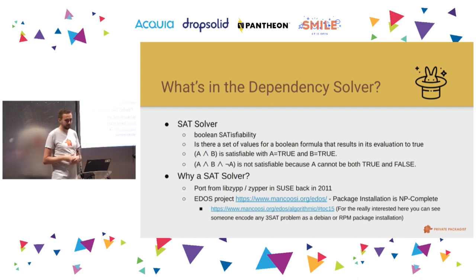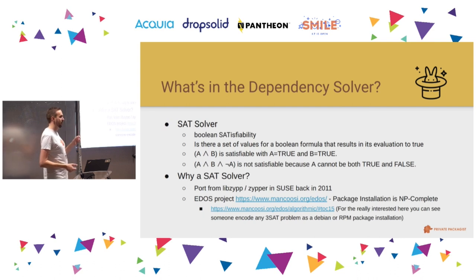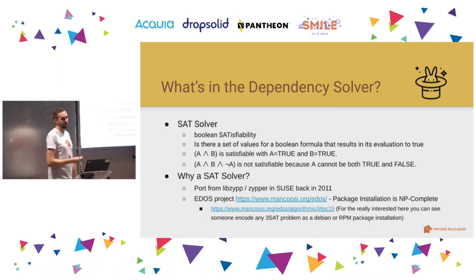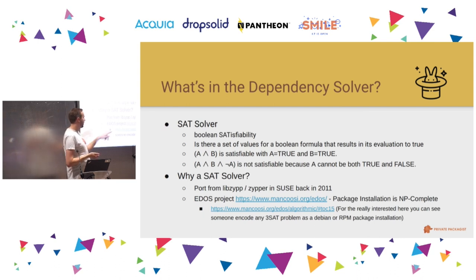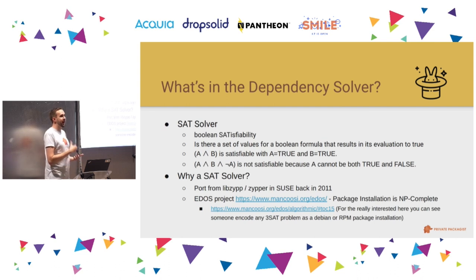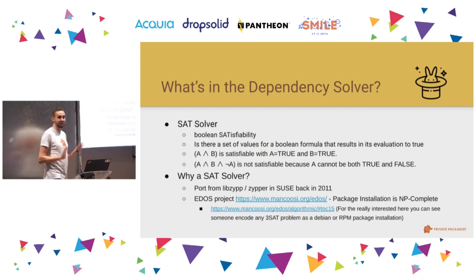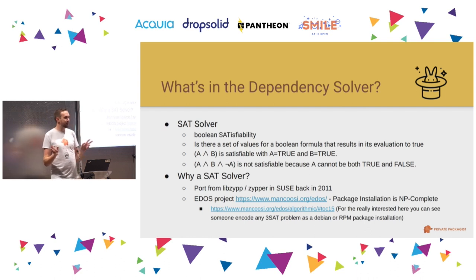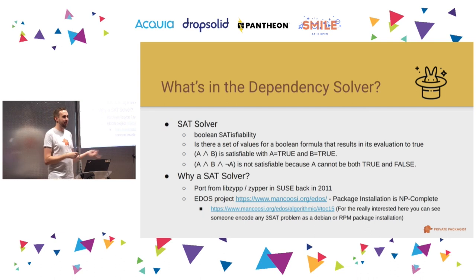Why are we using a SAT solver for dependency resolution? The origin of the solver in Composer is libZip, or the tool Zipper, in SUSE back in 2011, which internally uses a SAT solver. There's a EU project with theoretical background on this — researchers proved that package resolution is NP-complete. For those really interested, you can read about how you can encode any 3-SAT problem as a Debian resolution problem. They did a formal proof showing you can convert package management into any random satisfiability problem and vice versa.